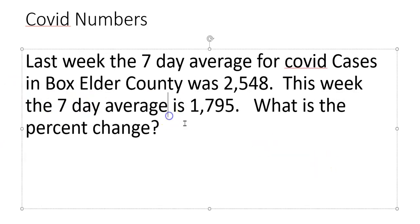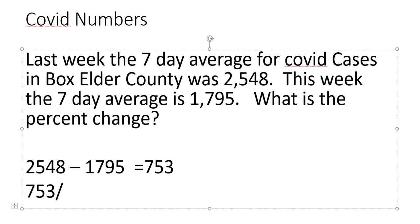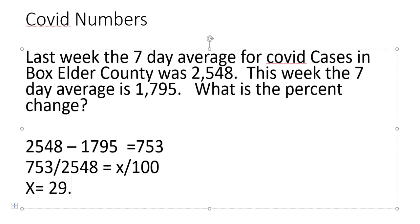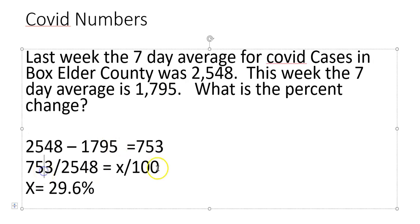Last week, the seven-day average for COVID cases in the county was 2,548. This week, the seven-day average is 1,795. What is the percent change? 2,548 minus 1,795 equals 753. Then 753 over the original 2,548 equals X over 100. You can do 753 divided by 2,548 times 100, or 753 times 100 divided by 2,548 — either way gives me 29.6%.